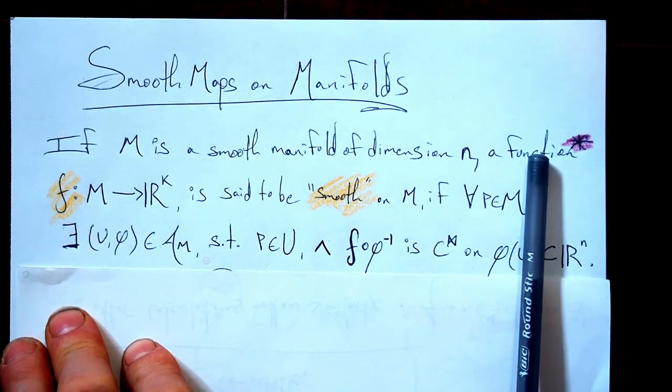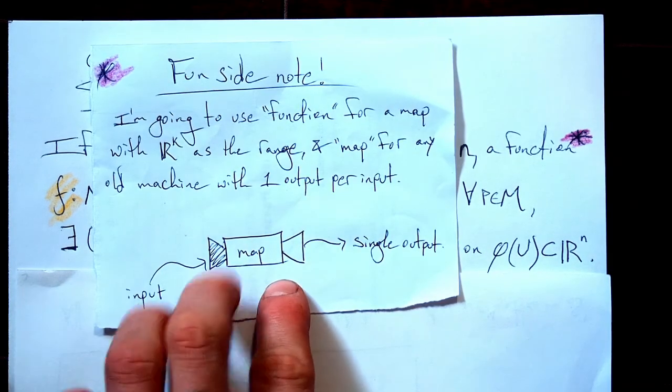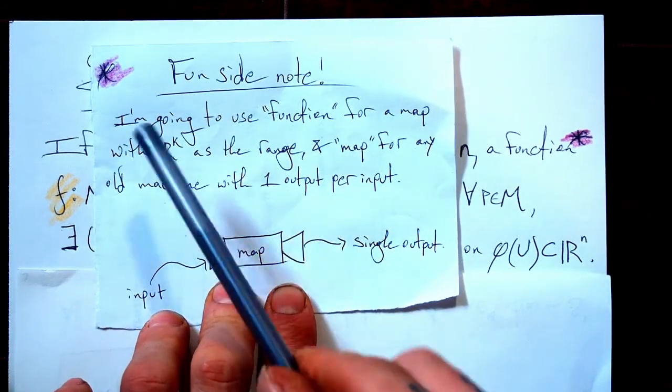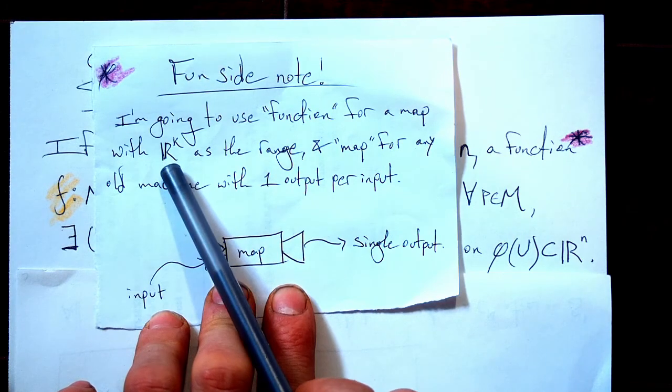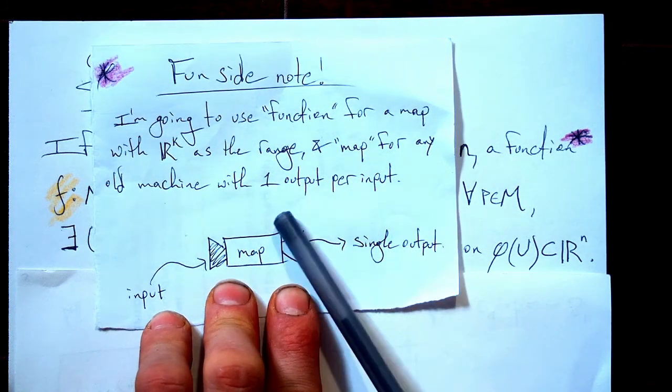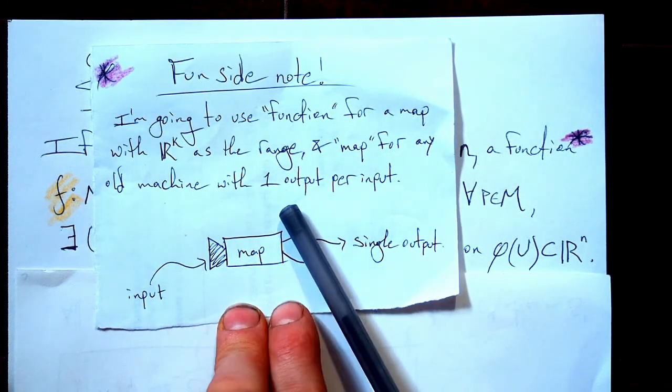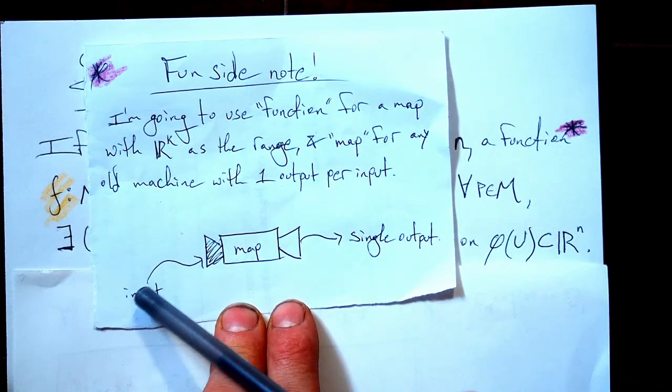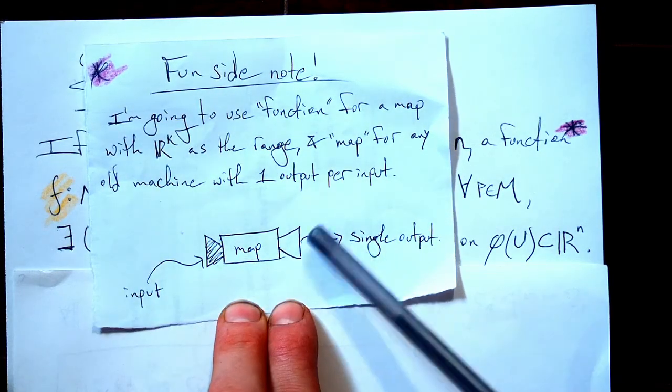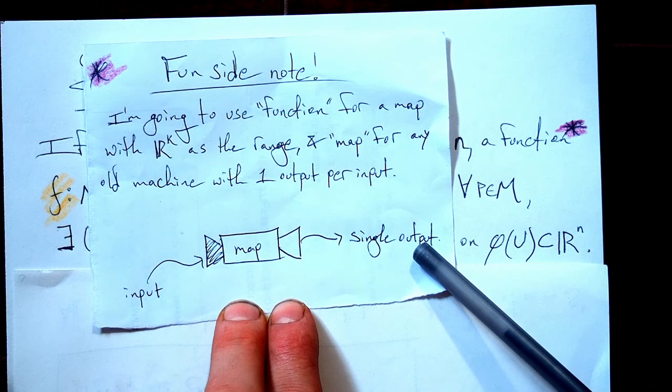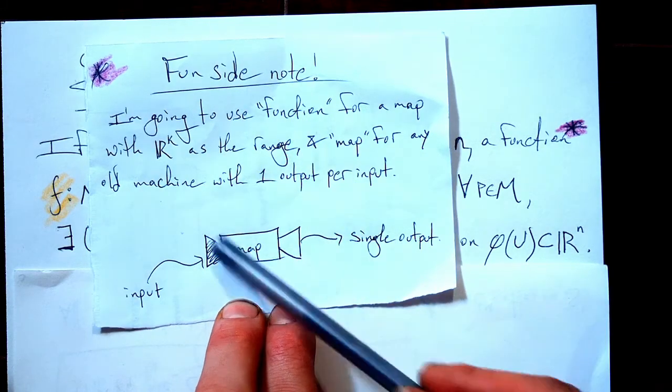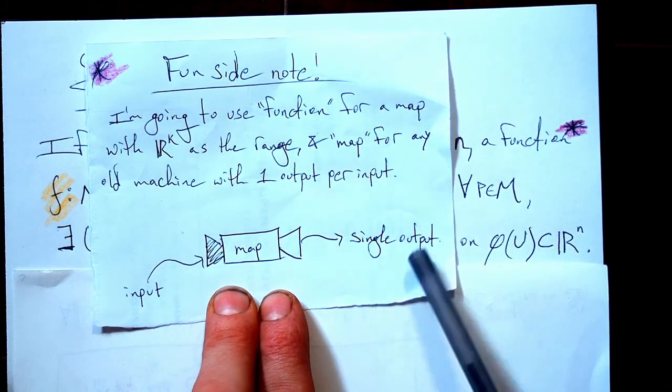Well, what the hell do we mean by function? I just want to make a little note on that, a fun side note. So I'm going to use the word function for a map with ℝ^k as the range. It maps to copies of ℝ. I don't care where it starts, I don't care what the domain is, but it spits out tuples of real numbers. And map is just any old machine that you put one thing in and you get one thing out. You never put one thing in and get two things out. You might have many to one, but you never have one to many. To summarize that, a function is a map like this, but it outputs elements of ℝ^k.